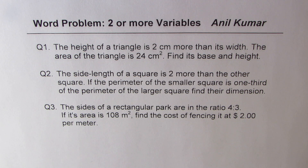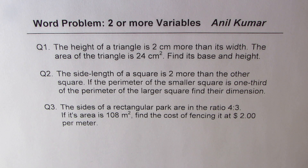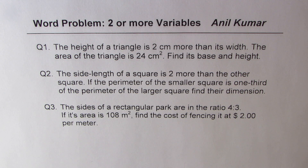Question three: the sides of a rectangular park are in the ratio of four is to three. If its area is 108 meters squared, find the cost of fencing it at $2 per meter.